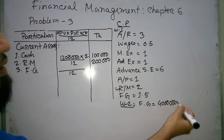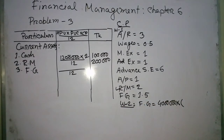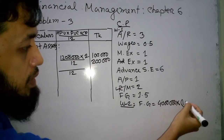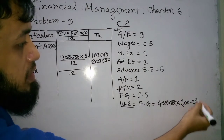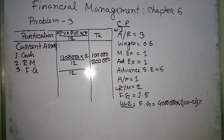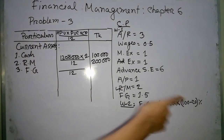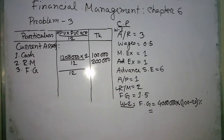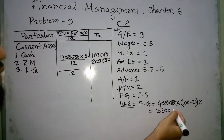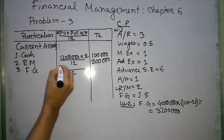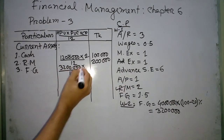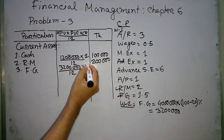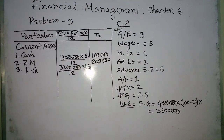Gross profit is 20 percent on sales, so cost is 80 percent. The cost percentage is used here. Starting with cost — both starting figures — finish goods calculated at cost, not at selling price.